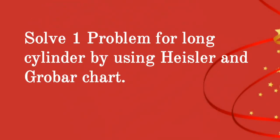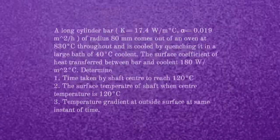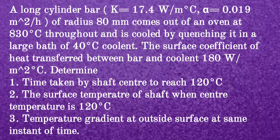We will solve a problem for a long cylinder using the Heisler and Grover chart. A long cylinder bar has conductivity K = 17.4 W/m·°C, thermal diffusivity alpha = 0.019 m²/hour, and radius 80 mm. It comes out of an oven at 830°C throughout and is cooled by quenching in a large bath of coolant at 40°C. The surface coefficient of heat transfer between bar and coolant is 180 W/m²·°C.